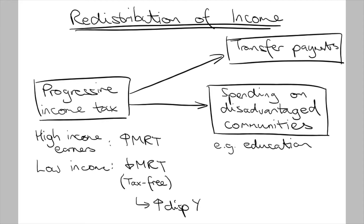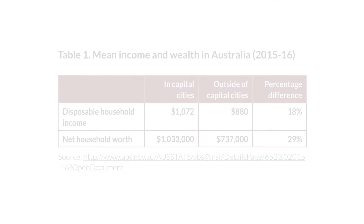Another initiative that could lessen income inequality between people from different geographical locations would be expenditure on transport infrastructure. We know that Australians living in rural and remote areas have lower average income compared to those in urban areas. So if government expenditure was allocated towards building freeways to connect these areas, workers in rural and remote areas would have greater geographical mobility, giving them access to high paying jobs in urban areas and closing the wage gap. Government investment into telecommunications infrastructure could also give them access to greater markets.